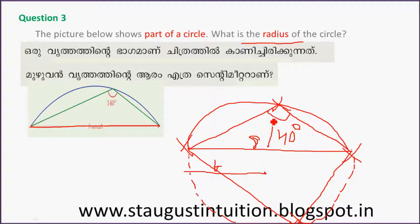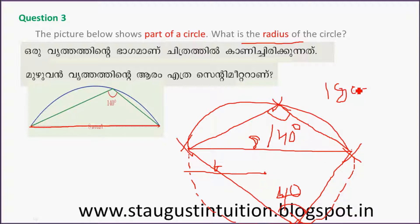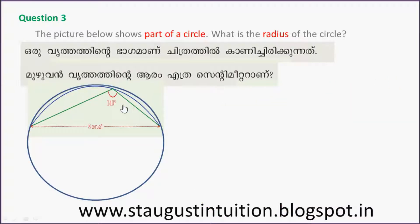The bottom line is the circle. If you want to add 80 to 80, I want to add 80 to 80. 80 minus 80 minus 80. So let's complete this diagram. This diagram is 10.